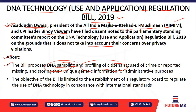DNA samples can also be taken if a person is missing, so that the sample can be matched with those of accused or missing people, helping to identify those accused of certain crimes. This unique genetic information would also be used for administrative purposes. The objective of the DNA Technology Bill is to establish a regulatory board that would regulate the use of DNA technology to international standards, preventing misuse.